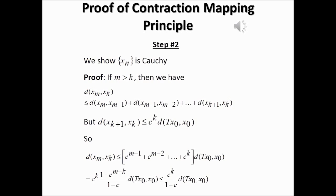Because c is between 0 and 1, taking the limit of that inequality as k goes to infinity gives the limit of c to the power k equal to zero. So the sequence is Cauchy, which completes this part of the proof.